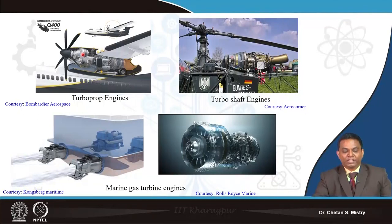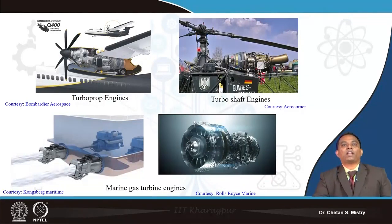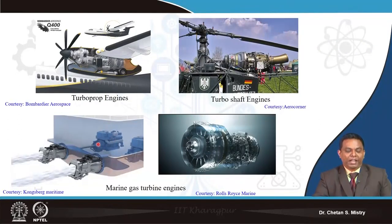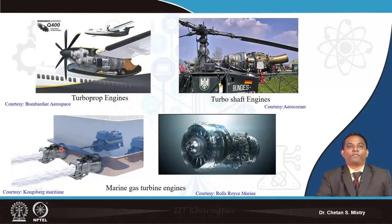The gas turbine engine for turboprop aircraft is similar to that of a land-based power plant, with a power turbine used to rotate the propellers. Helicopter engines use a turbo shaft configuration, where the shaft from the gas turbine engine rotates the rotor blades. For marine applications, the gas turbine engine is used to move the propellers and propel ships.